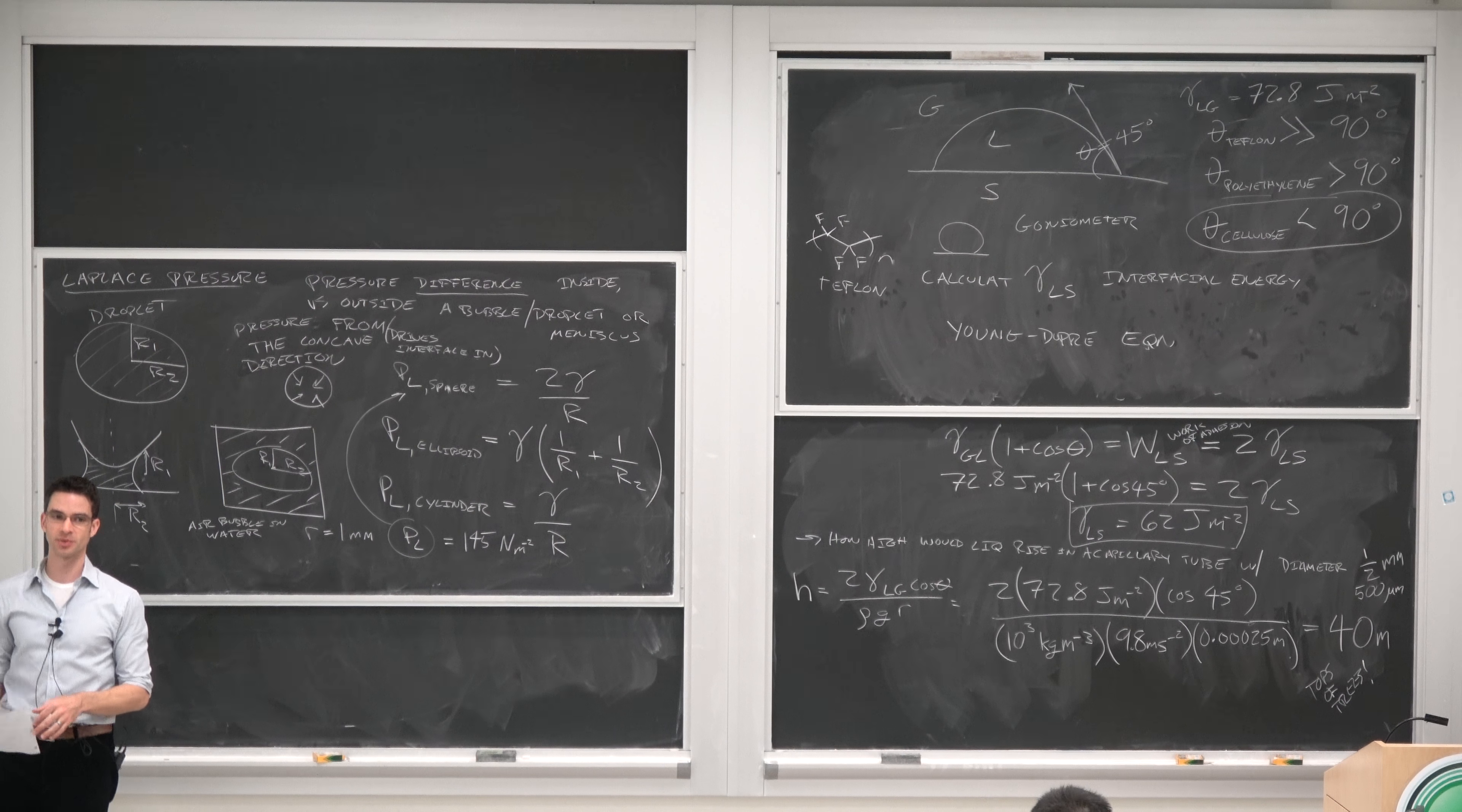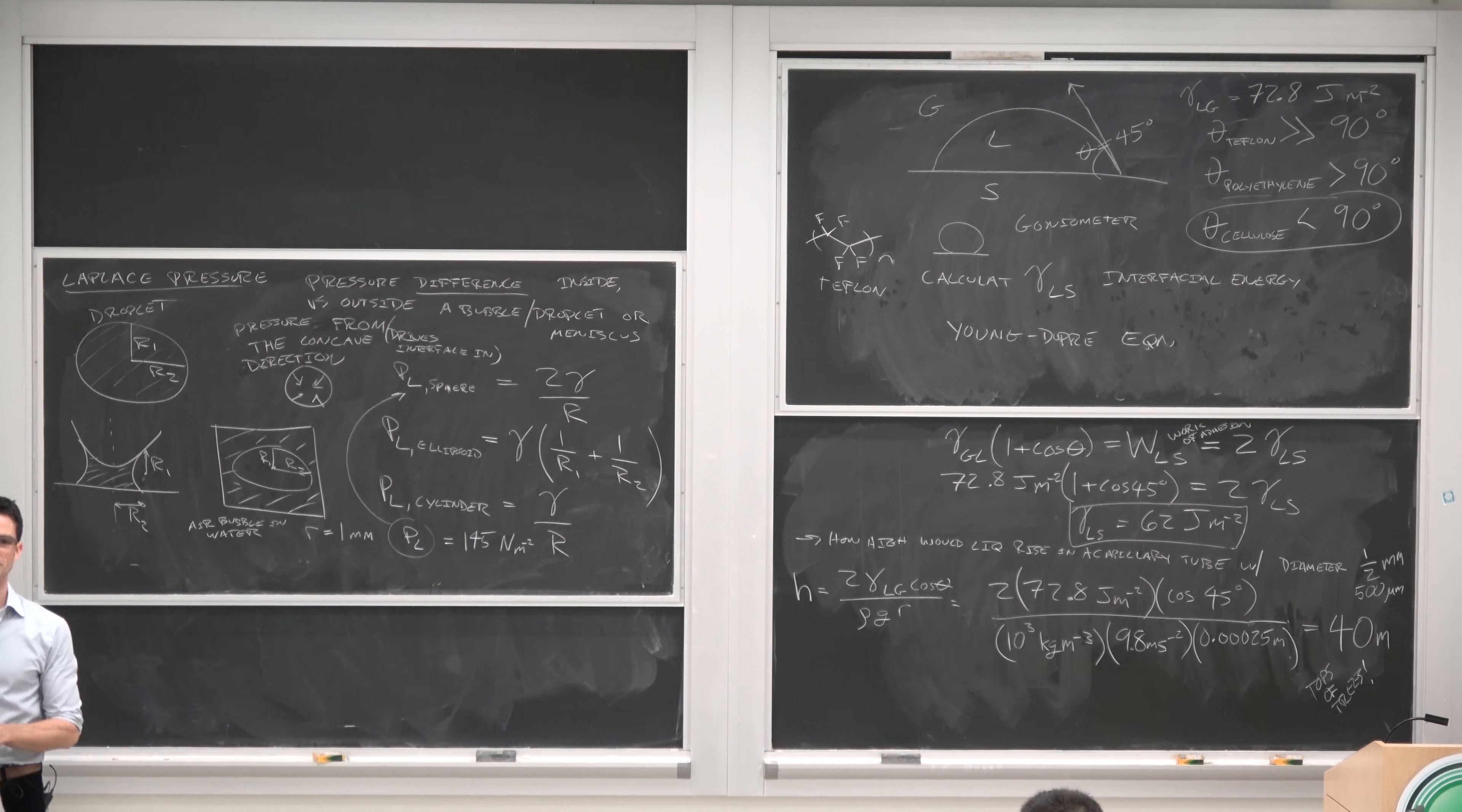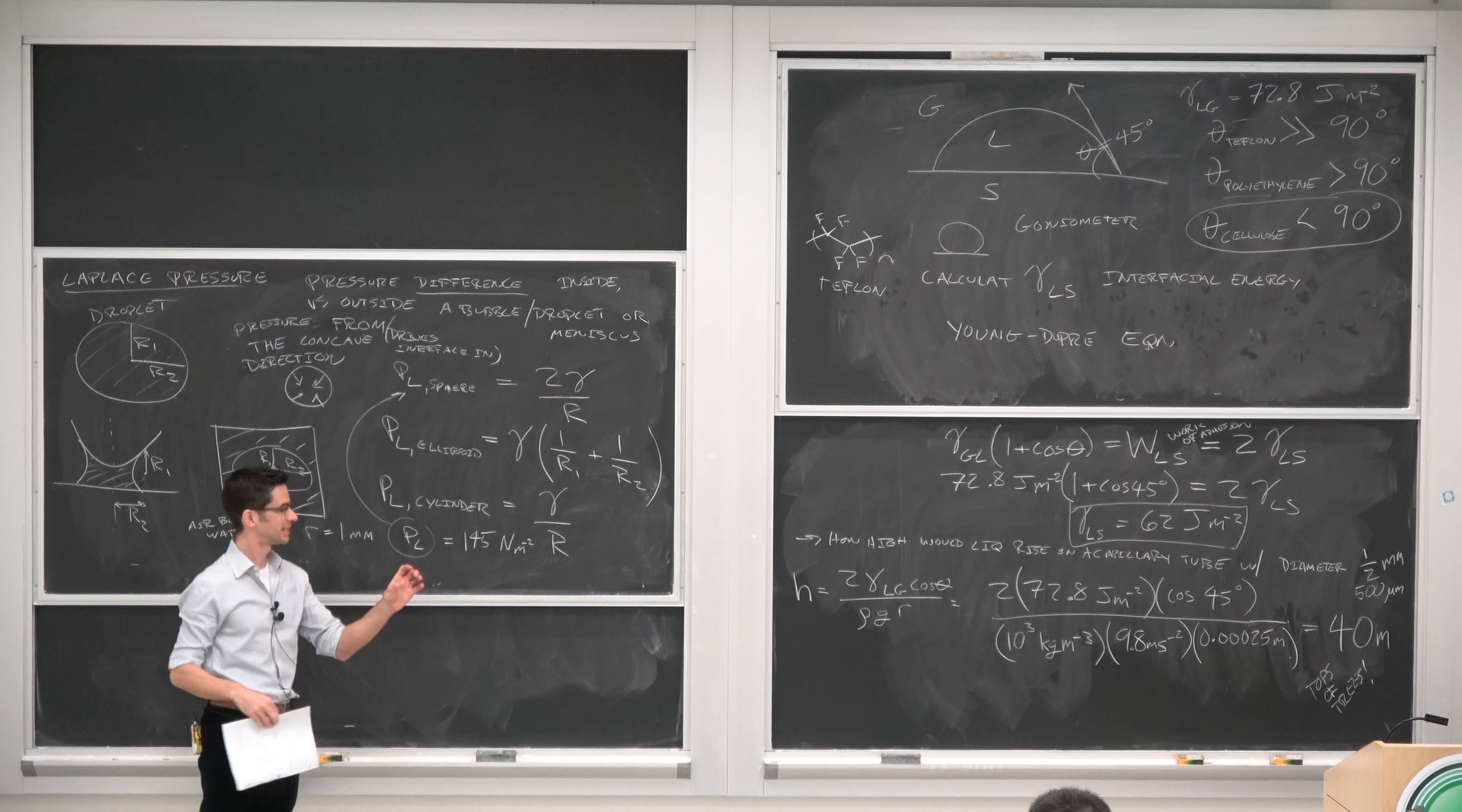Is that a lot of newtons per square meter? Not really. What's atmospheric pressure in newtons per square meter? 100,000 newtons per square meter, 10 to the 5. So this is just, so this pressure is the excess pressure.